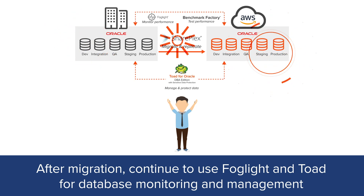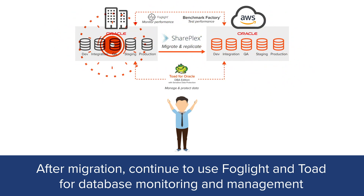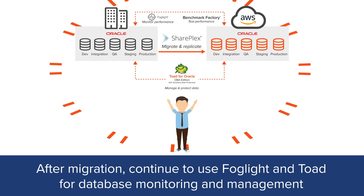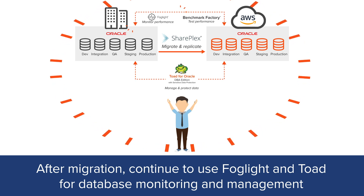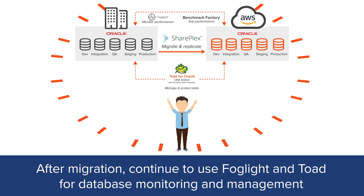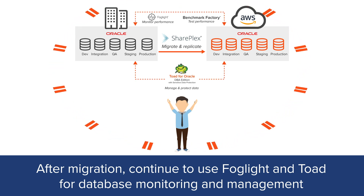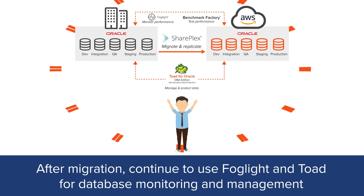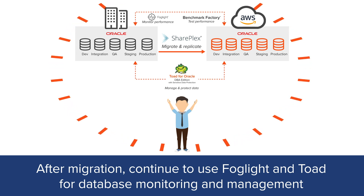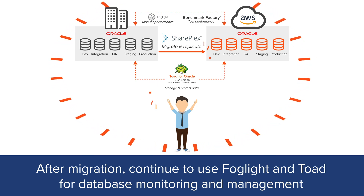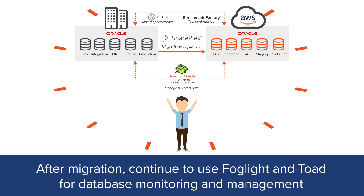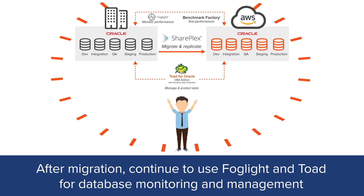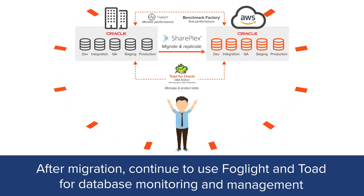At a high level, that's it. Once you've migrated your Oracle database to AWS, use Foglight for databases to monitor database performance for both the on-premises Oracle DB and the cloud instance. Keep using Toad for Oracle to maintain and manage your Oracle cloud databases in the same way as your on-premises databases, even if you decide to downsize to standard edition.